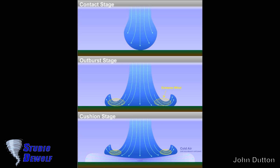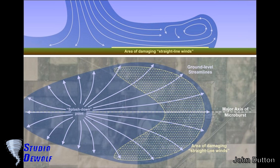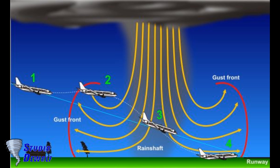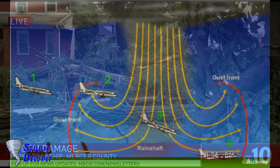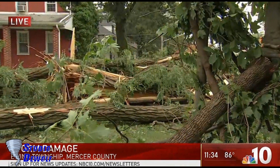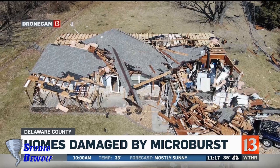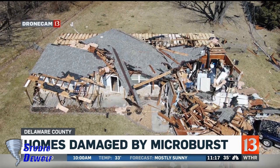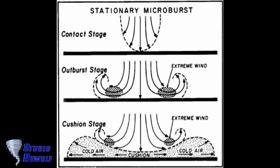Downbursts usually last only a few minutes and then dissipate. However, despite their short lifespan, microbursts are a serious hazard to aviation and property and can result in substantial damage to the area. Hopefully you have learned something about the downburst.